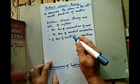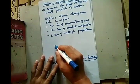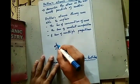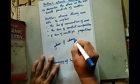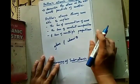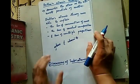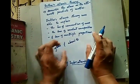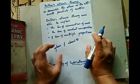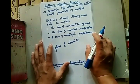However, this theory failed to explain why some substances like glass and ebonite, when rubbed with silk or fur, become electrically charged. This theory was unable to explain why they get electrically charged when wrapped by silk or fur.